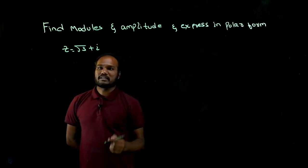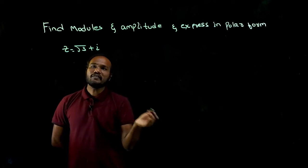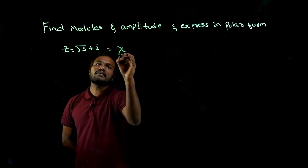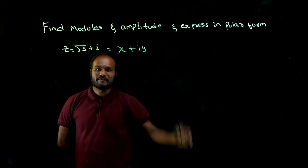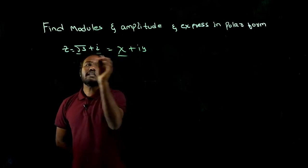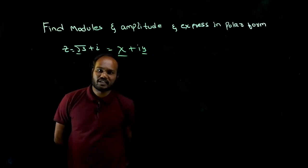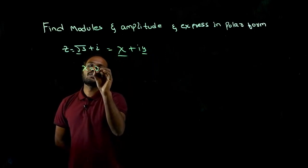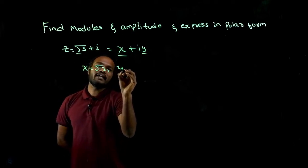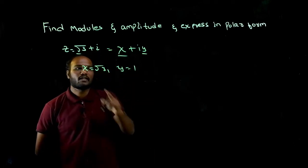We have to find amplitude. First, compare this with x plus iy. The x value is √3 and the y value is the i coefficient, which is 1. So x = √3 and y = 1.